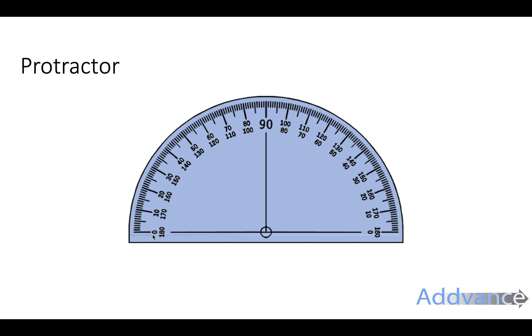Here you can see a protractor. It's got two scales. It goes from 0, 10, 20, 30, all the way to 90, and then all the way to 180 on this side.